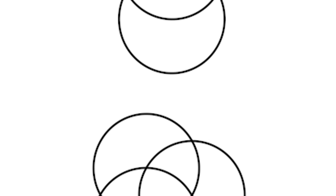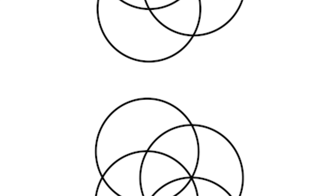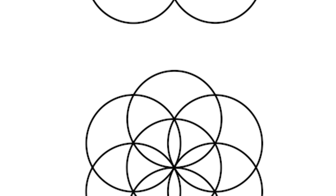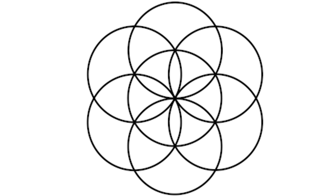To get this shape, you would start by drawing a circle with a compass, then draw a series of overlapping circles intersecting with the midpoint of the original circle until you end up with this image.